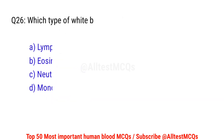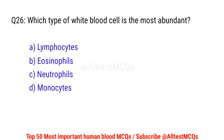Question number 26. Which type of white blood cell is the most abundant? Right option is C. Neutrophils.